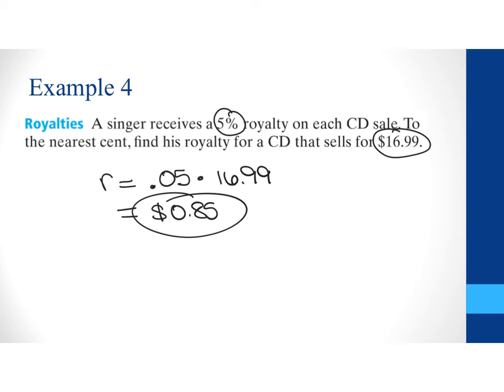So, 85 cents out of every CD that sells for $16.99 is actually going back to that musician. Again, for the proportion side of things if you like that instead you could say 5% is really 5 over 100 equals the royalty divided by the price.